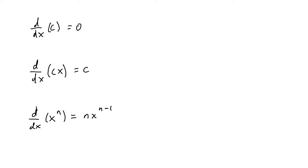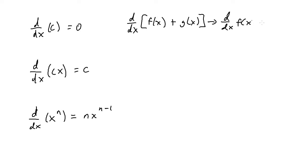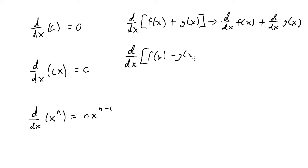The next rules are the sum and difference rules. If you have the derivative of f of x plus g of x, you can separate into two different derivatives: first take the derivative of f of x, then plus the derivative of g of x. The same thing works with the difference rule — if subtracting, you split into the derivative of f of x minus the derivative of g of x.